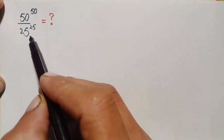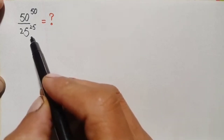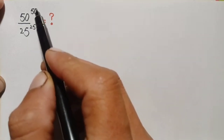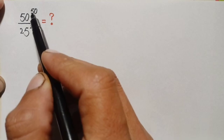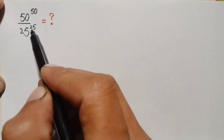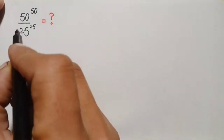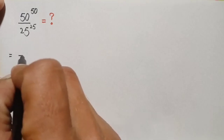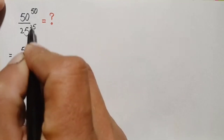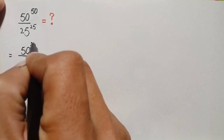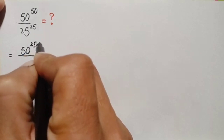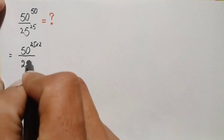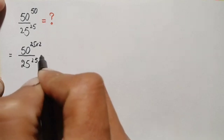I will try to solve this problem using two different methods. In the first method, I will try to make their powers the same. For that, we will factorize the power 50 and try to make it 25. So we can write the numerator as 50 raised to power 25 times 2, divided by 25 raised to power 25.